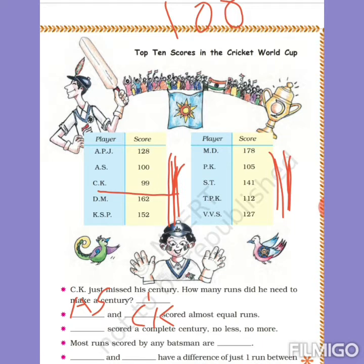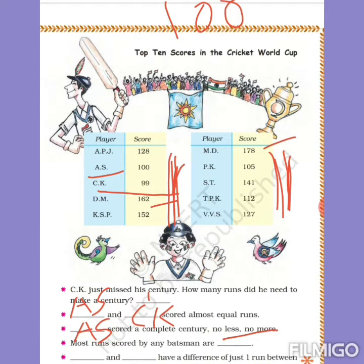Third question: Dad scored a complete century - no less and no more - meaning exactly 100. You can see AS scored exactly 100, a complete century. Fourth question: Most runs scored by any batsman - look for the highest score. After 162, the next number is 178, which is the highest. So MD scored the most runs.